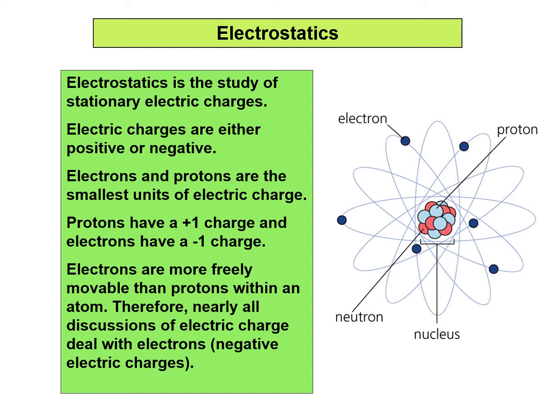An atom is said to be electrically neutral because it has an exact and equal number of protons and electrons. For example, an atom of barium with 56 protons also has 56 electrons. Since protons have a plus-one charge and electrons a minus-one charge, they sum to zero — electric neutrality. Electrons are more freely movable than protons, so nearly all discussions of electric charge deal with electrons and their movement.